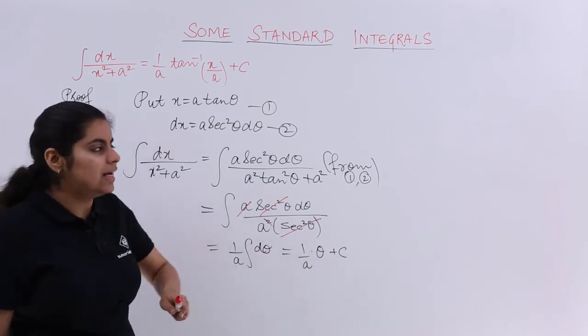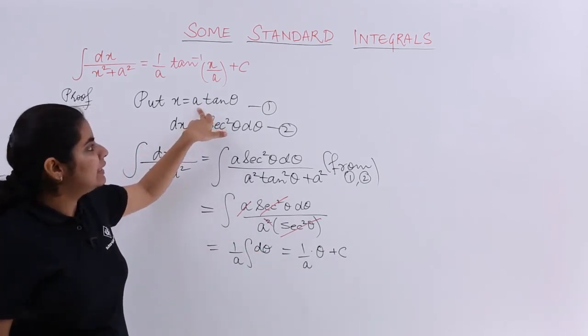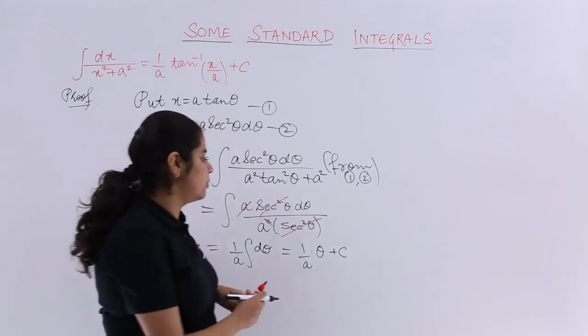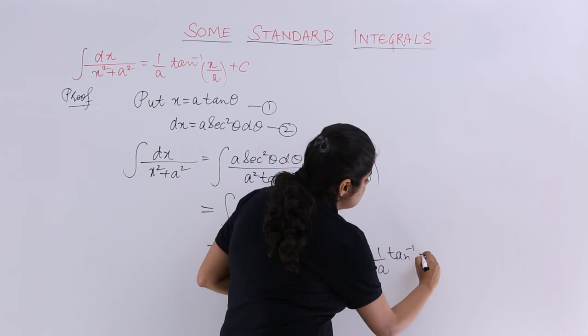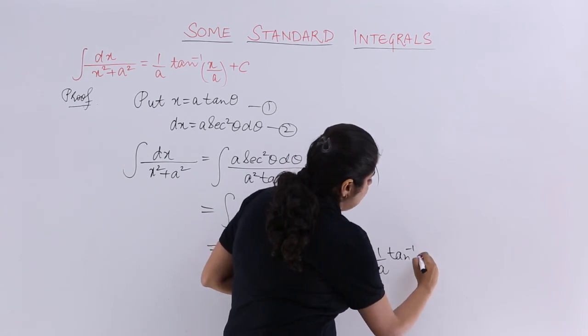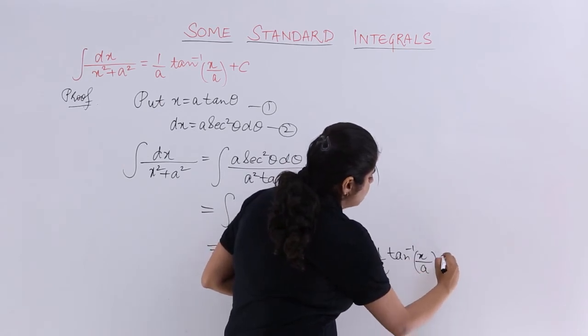Now what is theta? My theta is nothing but tan inverse x upon a from equation number 1. So it is nothing but 1 by a tan inverse x upon a, and that is from equation number 1.